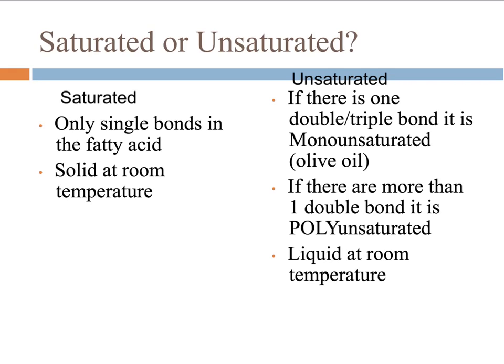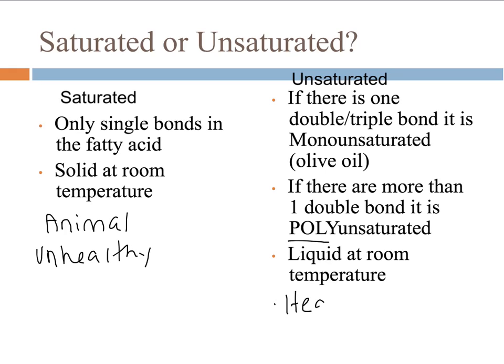In a saturated fatty acid, there are only single bonds, and they're going to be solids at room temperature. Animal fats are saturated fats, and these are not as healthy as unsaturated fats. For unsaturated fats, there's at least one double or triple bond in the fatty acid tail. If there's more than one, it's said to be polyunsaturated. They're going to be liquid at room temperature and tend to be a little bit healthier. If you had to choose between butter or olive oil, the unsaturated fat — olive oil — would be more healthy.